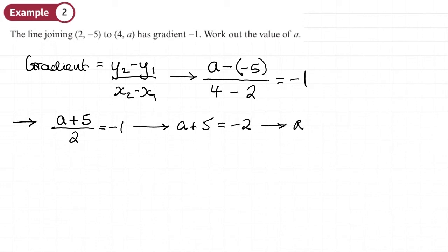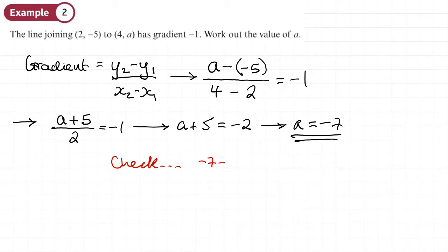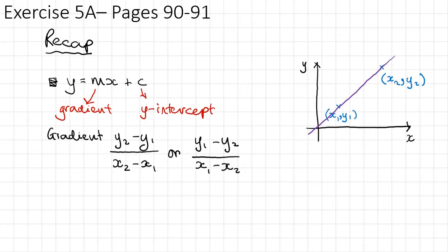Simplifying: a plus 5 over 2 equals negative 1. Multiplying both sides by 2 gives a plus 5 equals negative 2, so a equals negative 7. Checking: negative 7 minus negative 5 over 4 minus 2 gives negative 2 over 2 which equals negative 1. Correct. You should now be able to do exercise 5A on pages 90 to 91.